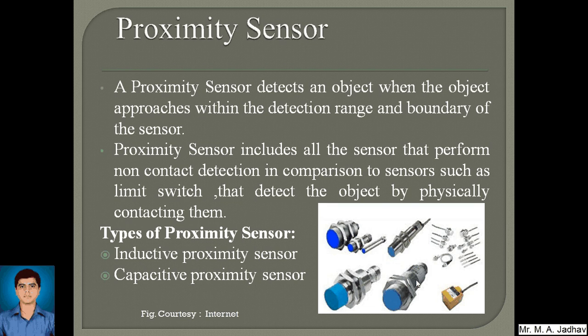Limit switches are sensors which detect the object when the object touches the switch. There are different types of proximity sensors, but in this video we are going to cover only two types: the inductive proximity sensor and the capacitive proximity sensor. We will go through these types one by one.